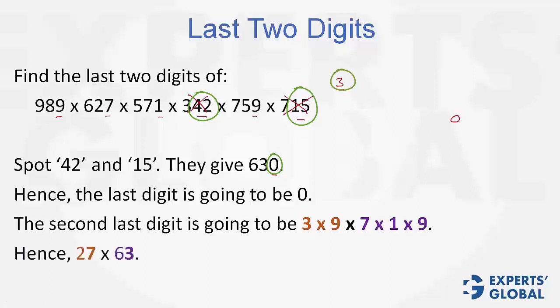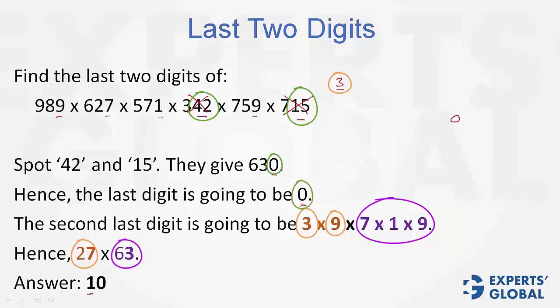Or the way I did it here - I caught hold of 3 here. 3 times 9 equals 27. And then 7, 1, 9 together. So this is 27 times 63. The penultimate digit turns out to be 1, and we had 0 as the last digit anyway. So the last 2 digits are 10.